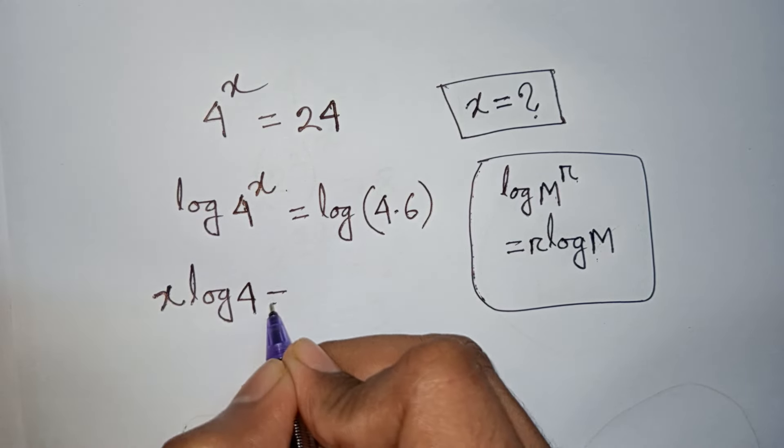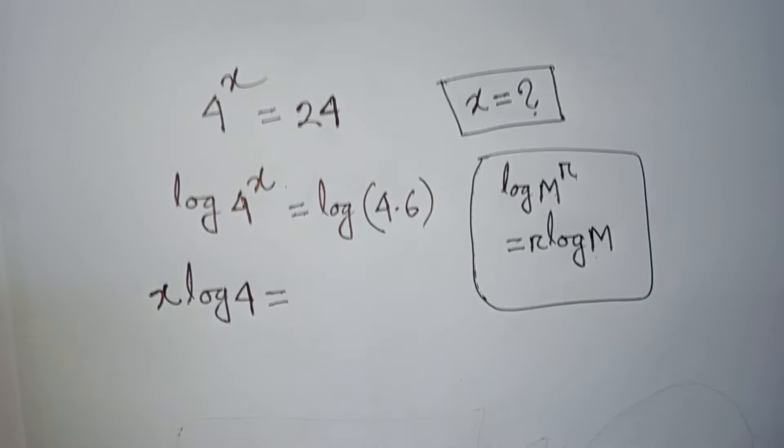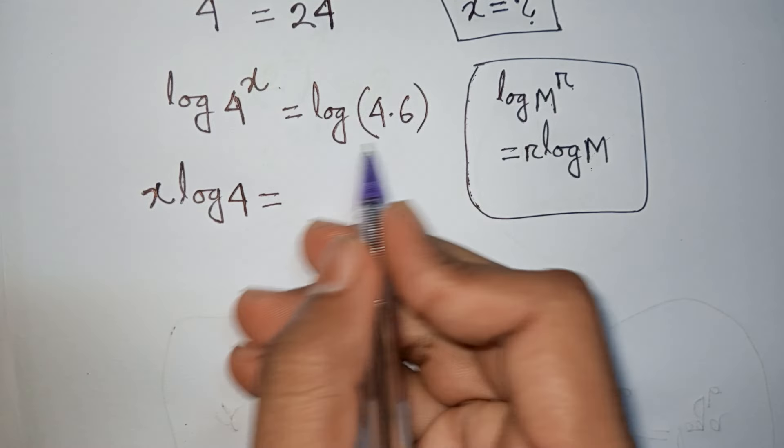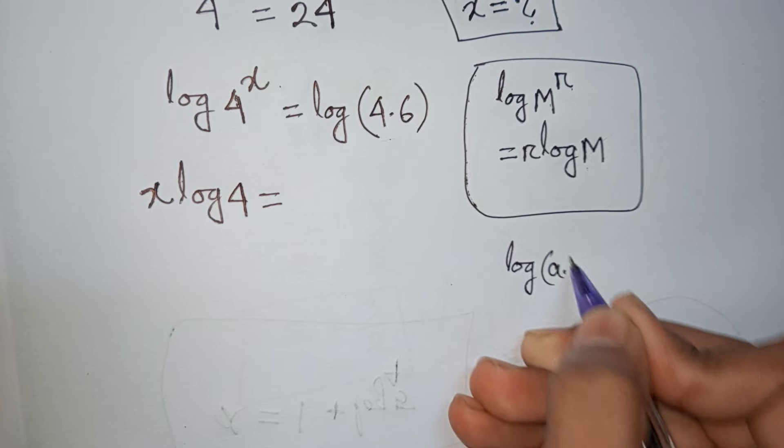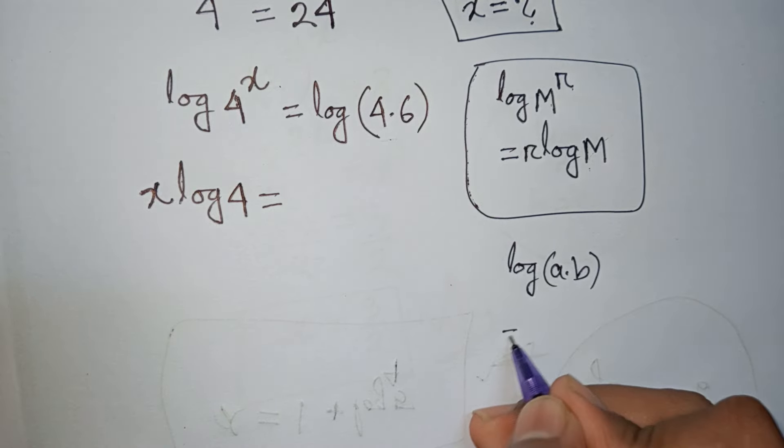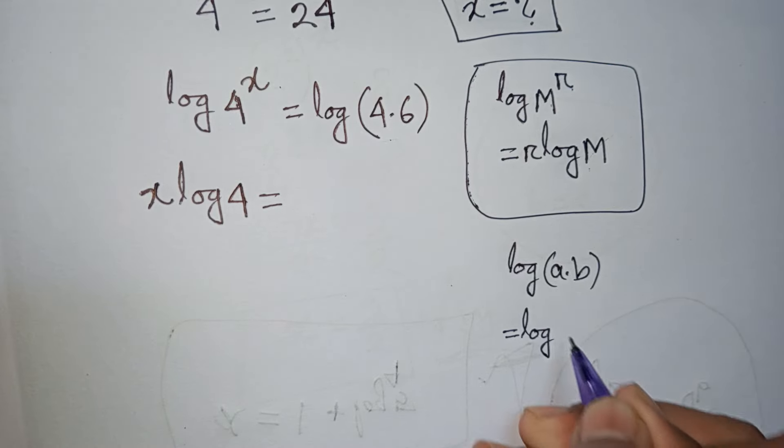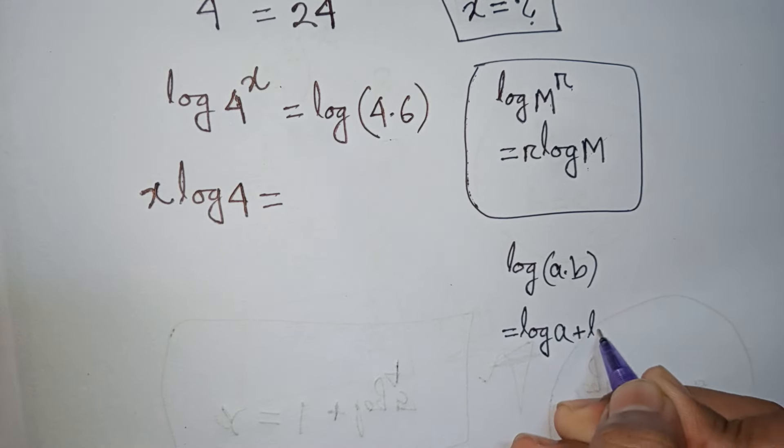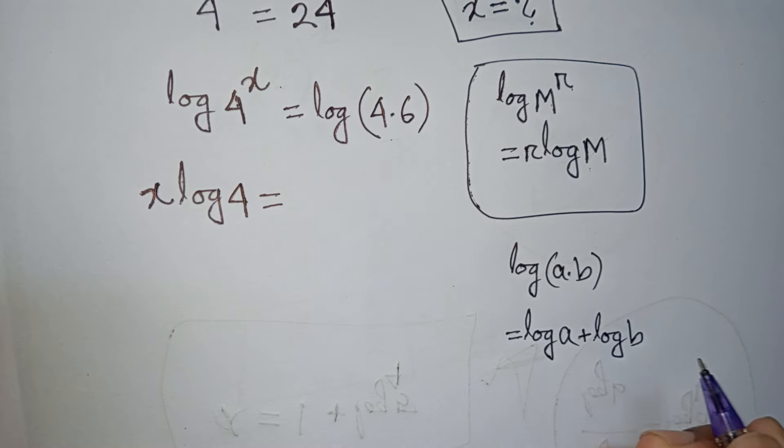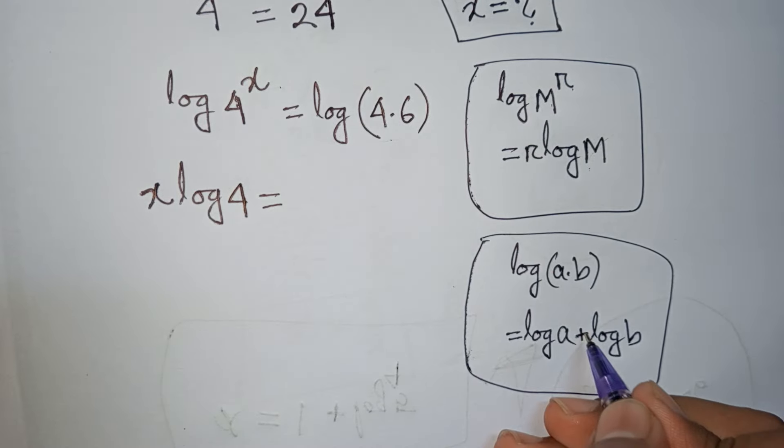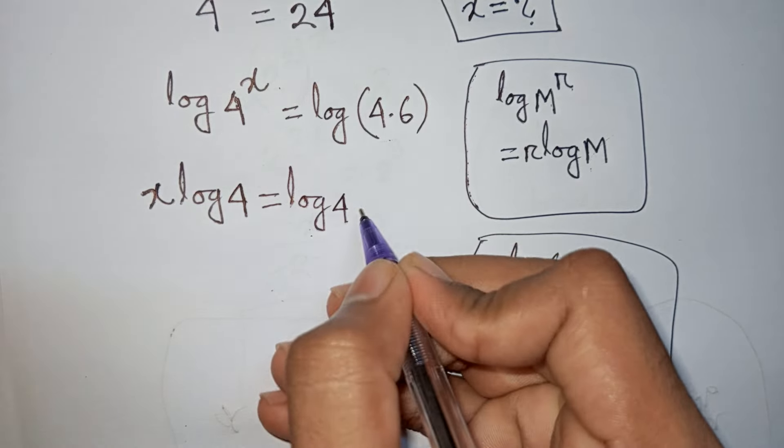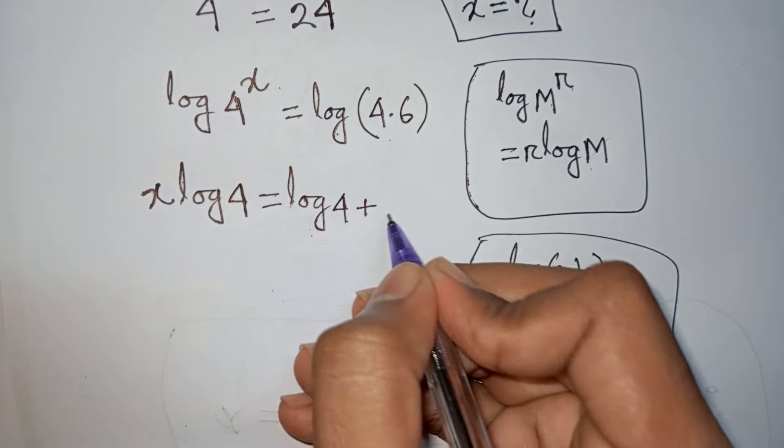Then is equal to, here you can apply this formula log of a times b is equal to log a plus log b. So according to this one I can write here log 4 and then plus log 6.